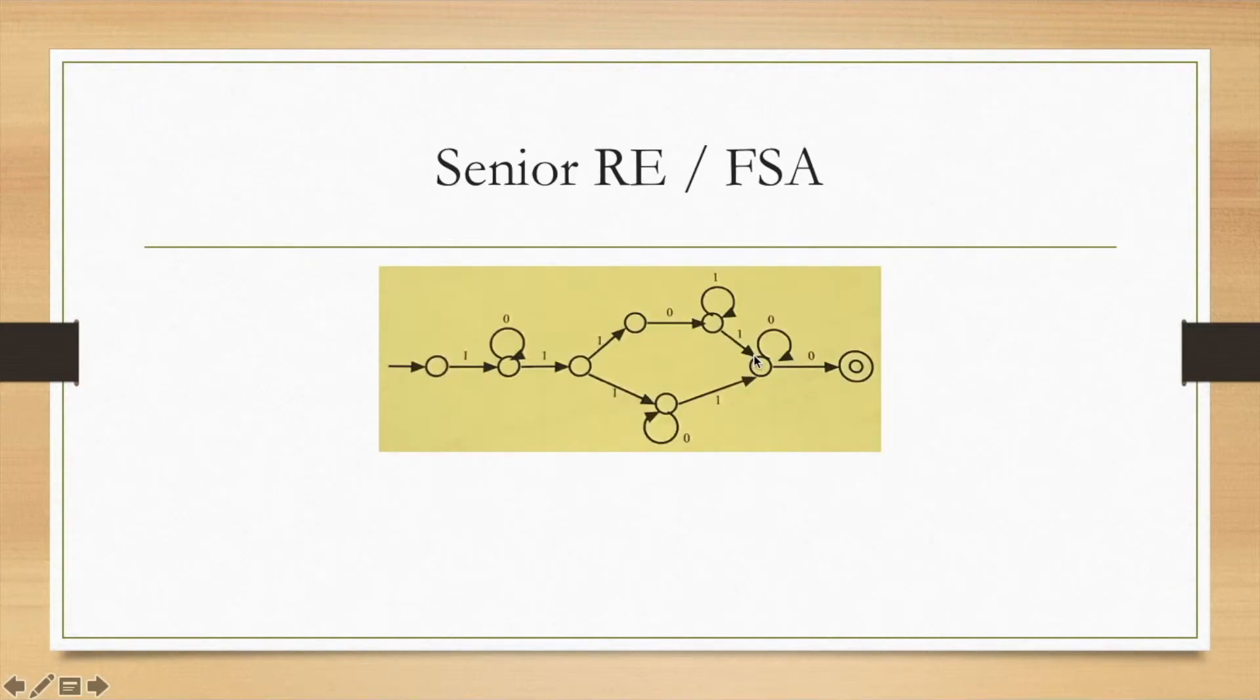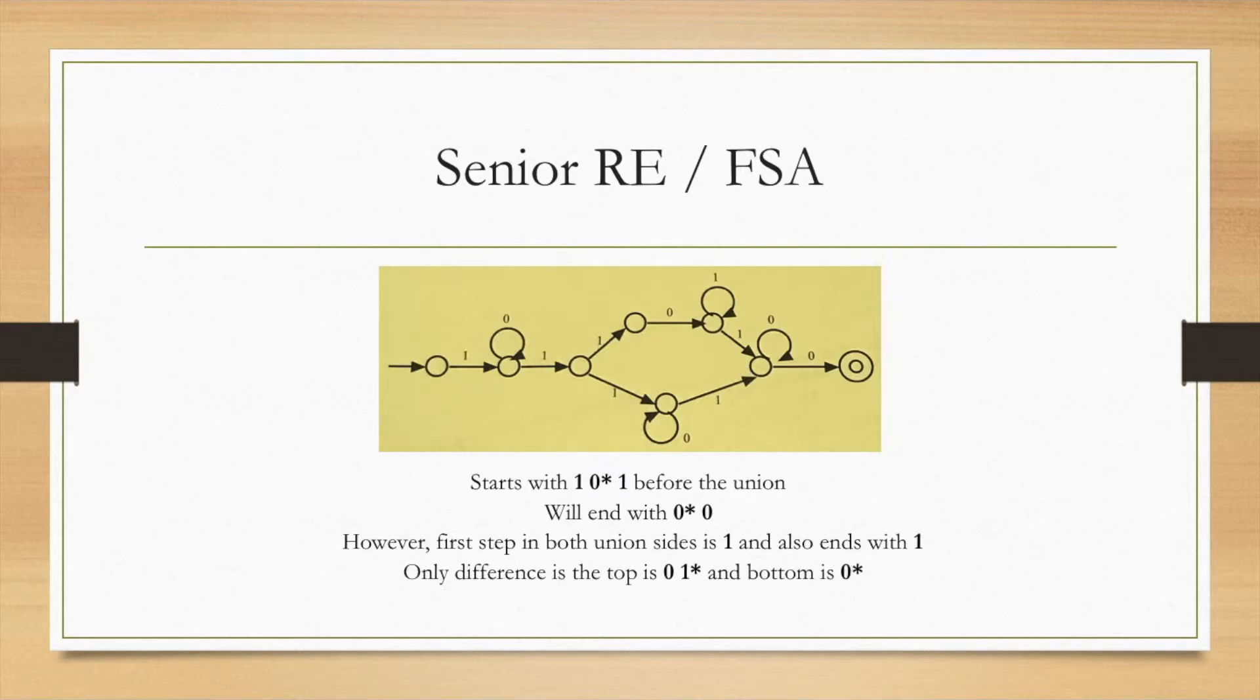We've got a couple senior questions. How can you notate this? Well, it starts with one zero star one, and then you can realize that it ends with zero star zero. You need to look at the diverging union paths, but they both start with one, they both end with one, so you don't need to put that in the union. Then you notice that the only difference is the zero star here versus the zero one star on the top. So put all together, you have a one zero star one one, and then it gets you to the union. So it's either zero one star union zero star, and then you end with another one zero star zero.